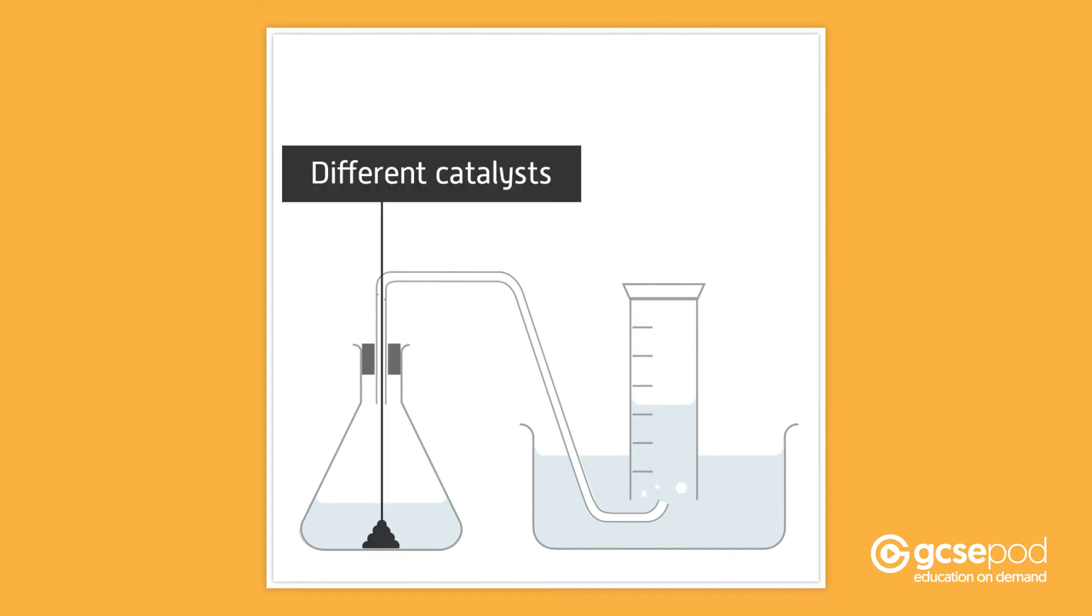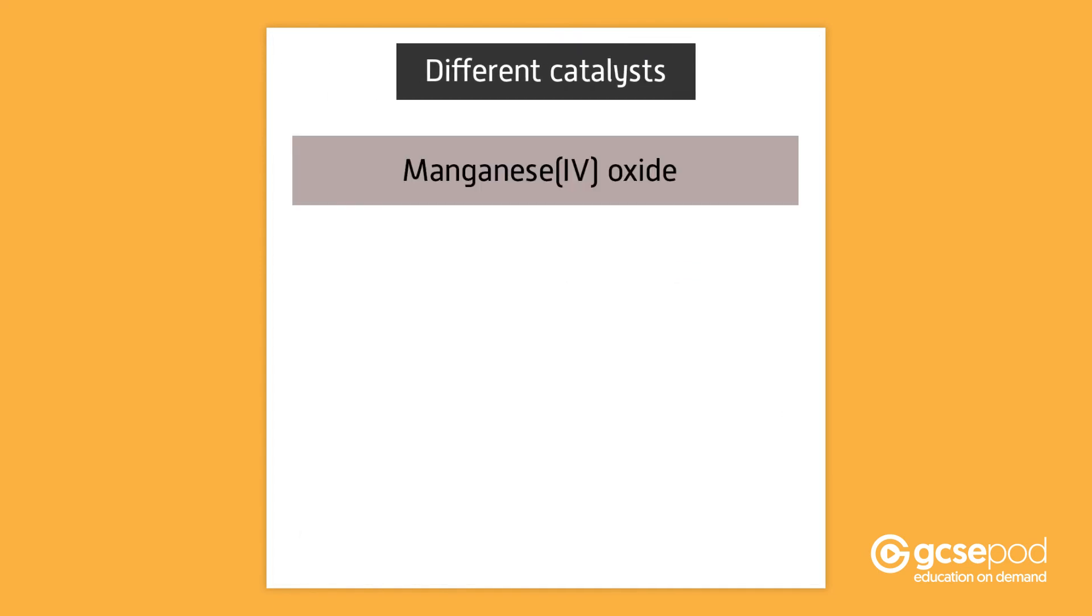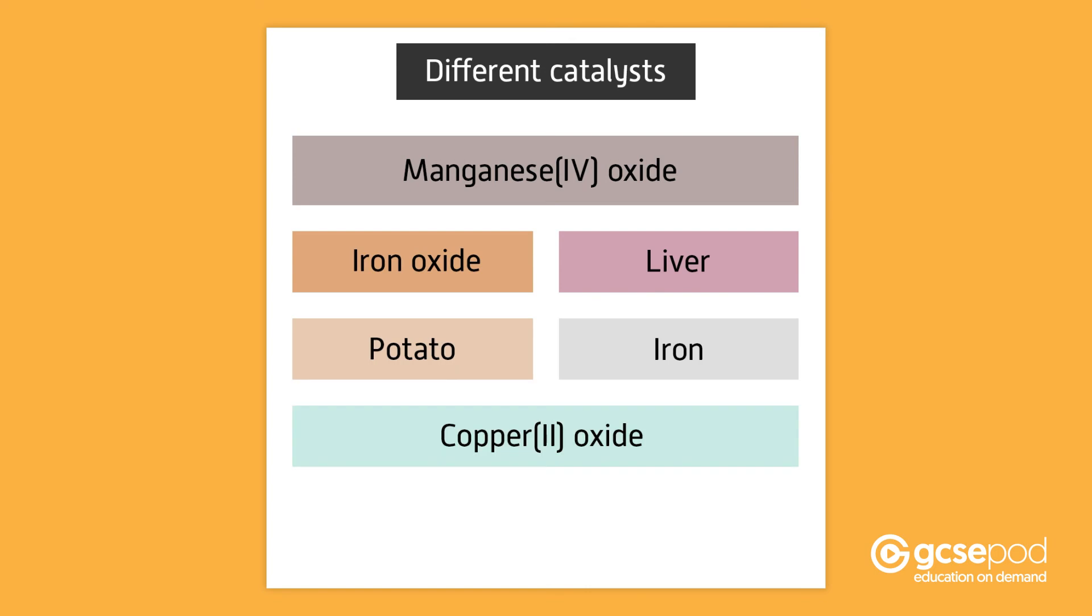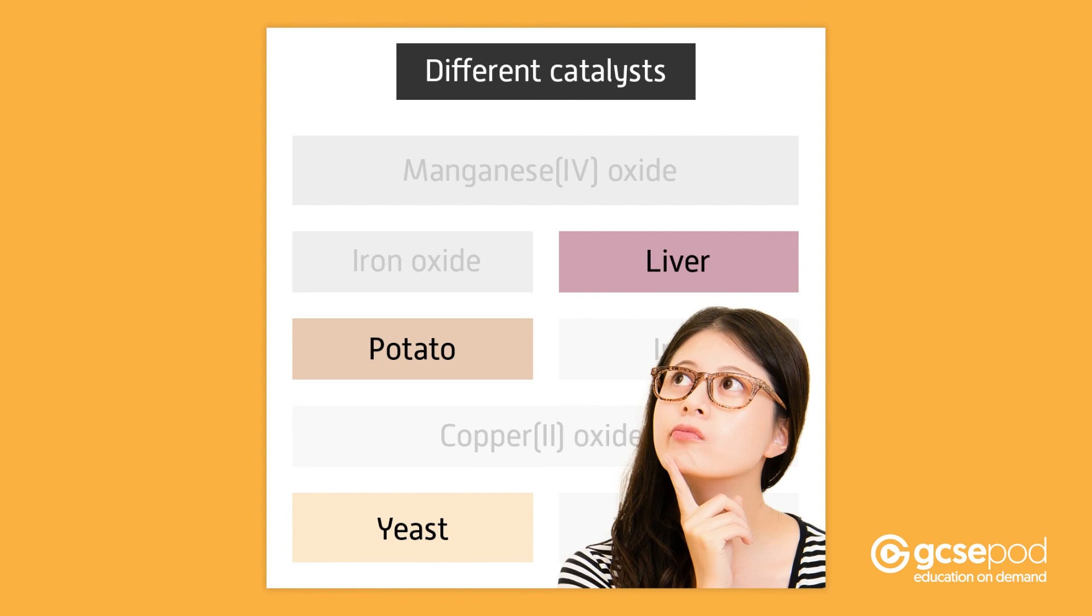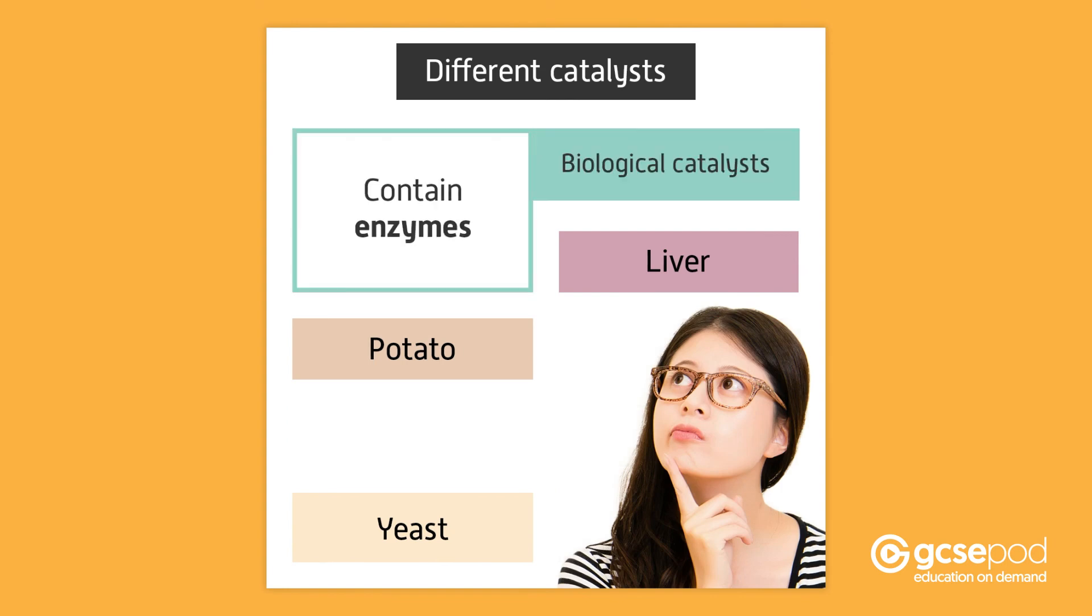Repeat this using different catalysts. The catalysts you can use are manganese(IV) oxide, iron oxide, liver, potato, iron, copper(II) oxide, yeast, and zinc oxide. It may seem odd to use liver, potato, and yeast, but these contain enzymes which are biological catalysts. To ensure that the enzymes are active, you need fresh samples of liver, potato, and yeast.